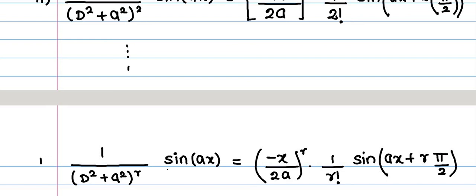This will be the required shortcut formula. This we can use if d square plus A square is repeated R times, where A is coefficient of x in the trigonometric function.